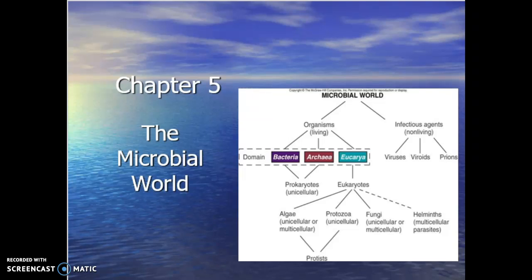We're going to talk about the microscopic living organisms, and briefly about the non-living organisms, or agents, that live in the marine ecosystem — that being the viruses. This is by far the most abundant form of life in the marine ecosystem, the microscopic or microbial stuff, and they are the producer base.